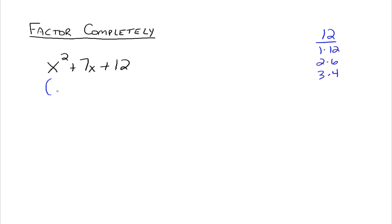We come over here and say if this is going to factor, it factors into a binomial times a binomial. The first part of each binomial is x, because x times x gives x squared. The 3 and 4 go in the second parts. Since the sign of the constant term is plus, the signs of the binomials have to be the same sign — they are whatever the sign of the middle term is. In this case it's plus, so we put plus 3 and plus 4. Thus x squared plus 7x plus 12 factors into x plus 3 times x plus 4.